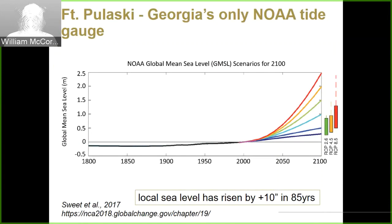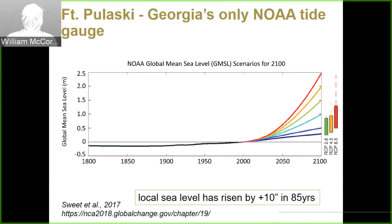On the low end, projections look toward something like a quarter to a half a meter; on the extreme side, toward two to two and a half meters. There are two key sources of uncertainty: the emissions trajectory we choose — high emissions puts us on the red curve, lower emissions in the blue space — and the response of the large ice sheets to that warming. High warming with massive ice sheet instabilities tips toward the red curve; more stable ice sheets keep us toward the middle ground.